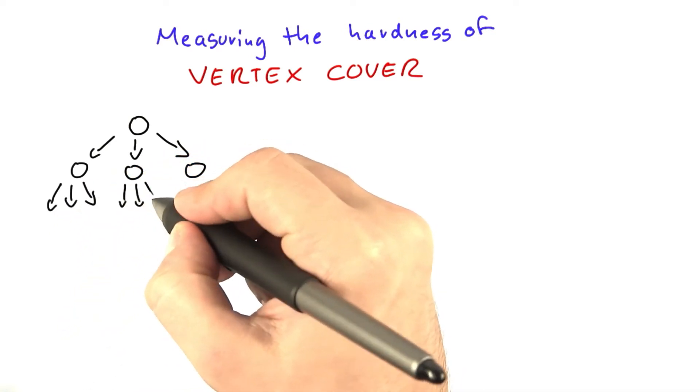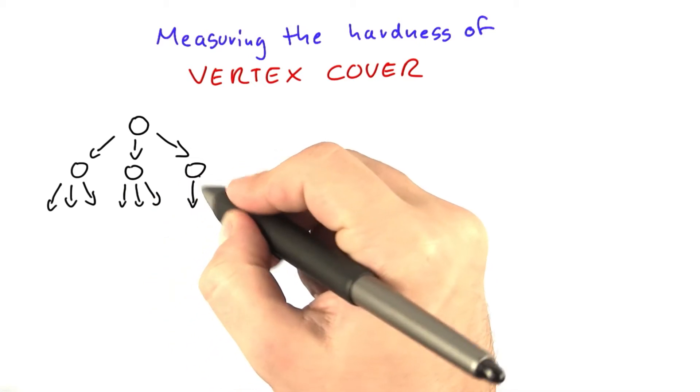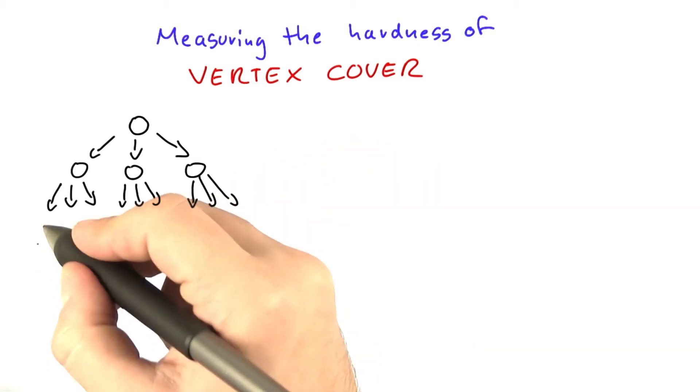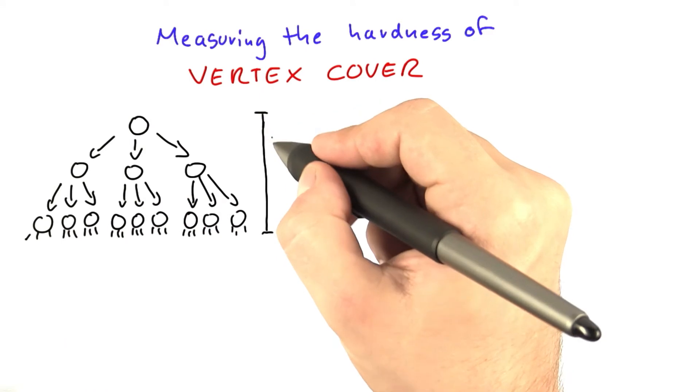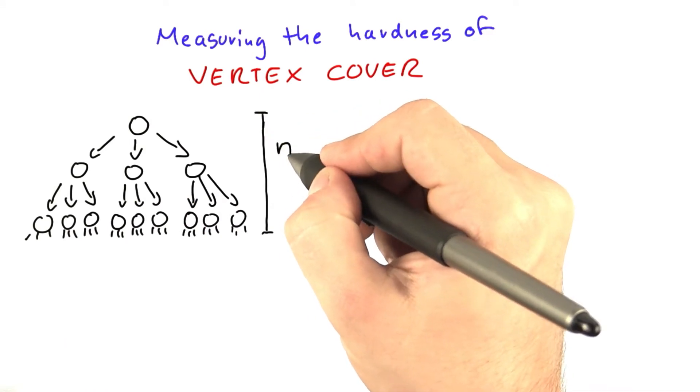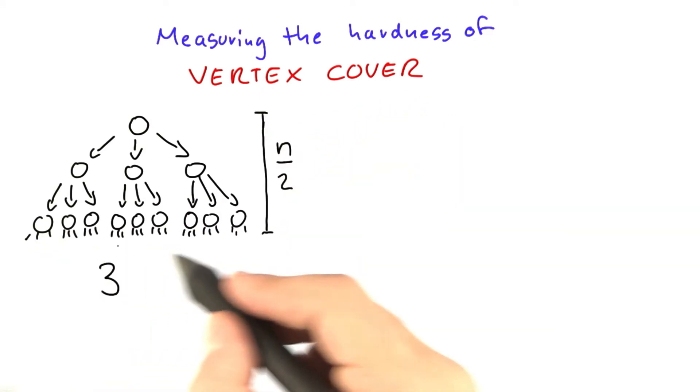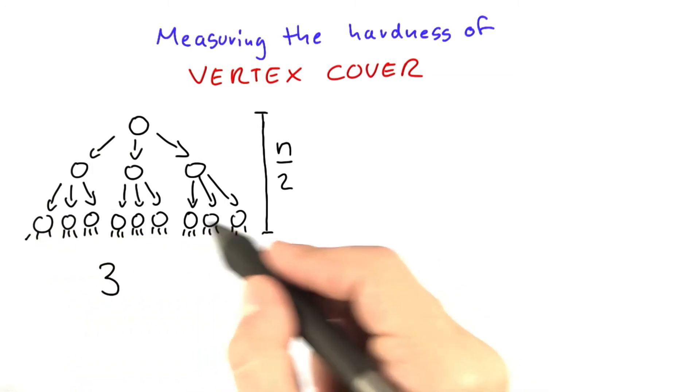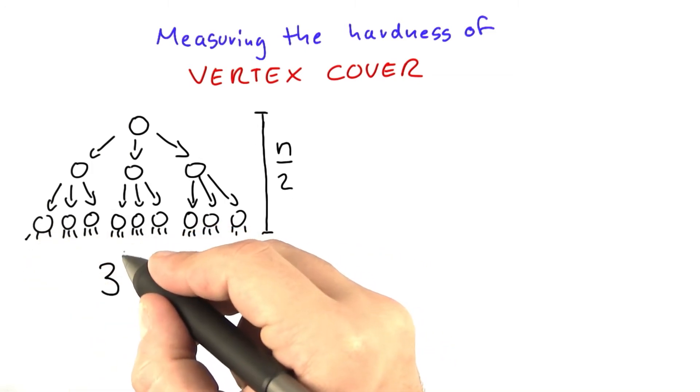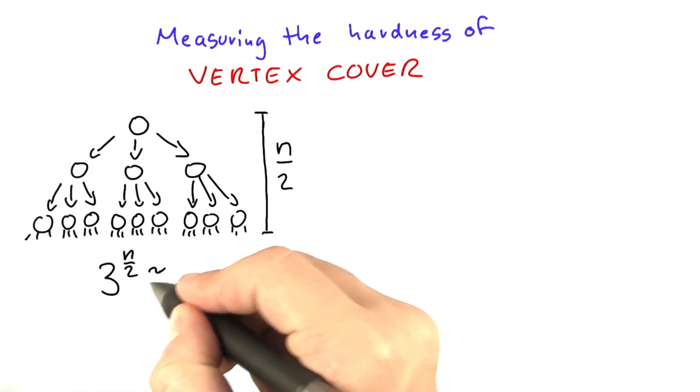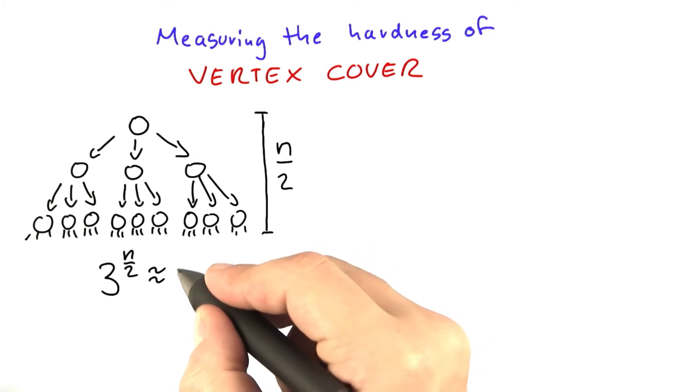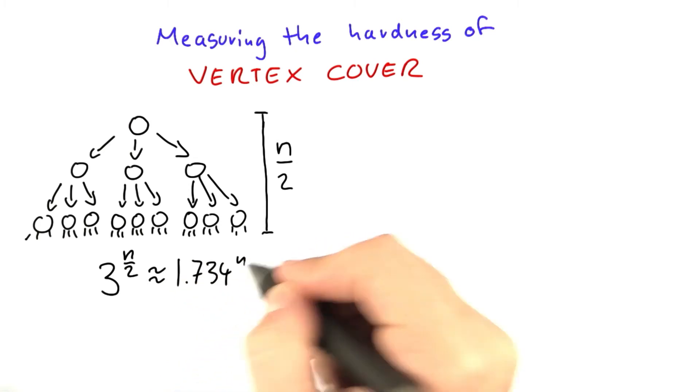So then on the next level, we again branched into three different possibilities on each level, and so on. And we said that the search tree had a size of n half, and the total number of solutions that we looked at in the search tree was 3 to the power of n half, which, as you remember, was about 1.734 to the power of n.